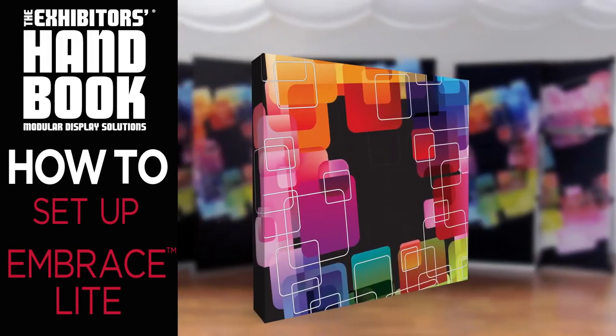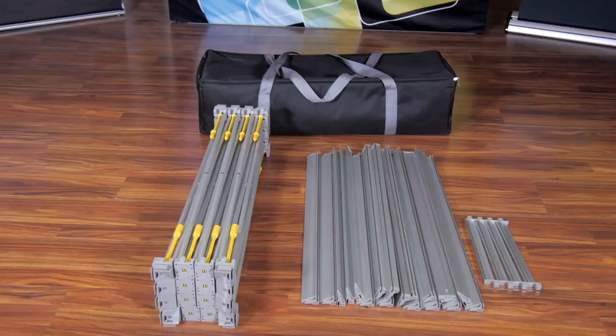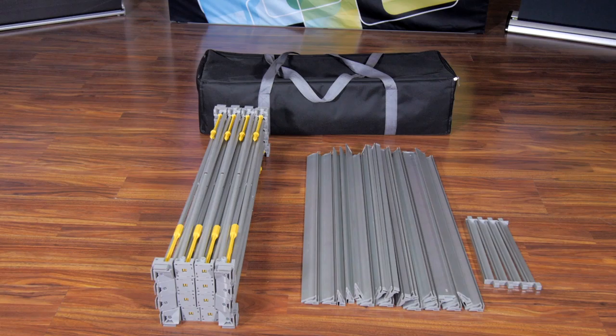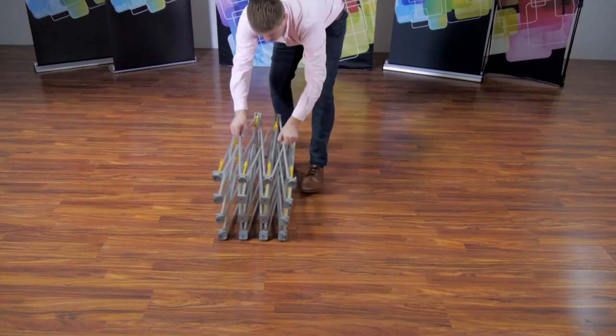The Embrace Lite is an economy collapsible display that features a basic frame, channel bars, and push fit fabric graphic that gives you a fast, seamless, and captivating portable display for your trade show event or advertising needs.